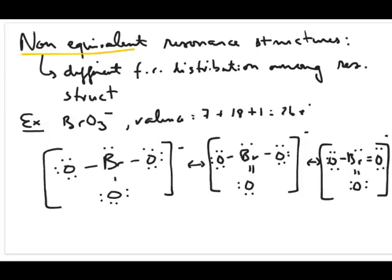Here I have drawn three different resonance structures for BrO3 minus — they're all legitimate structures, which is why they're all resonance structures. I'll call them A, B, and C. Structure A is the one we drew in the formal charge video. The formal charges are: negative one for each of the three oxygens, and positive two for the bromine. You can verify those calculations yourself, as we covered them in the prior video.